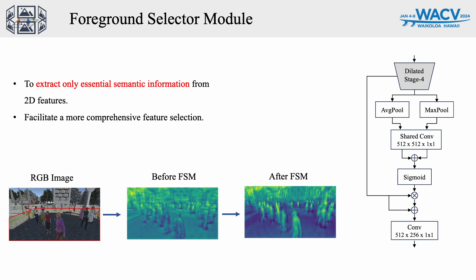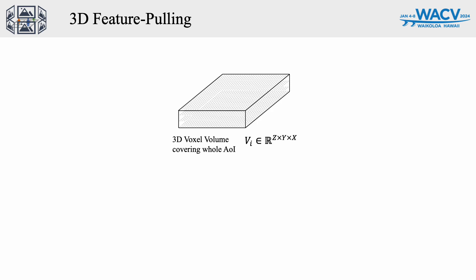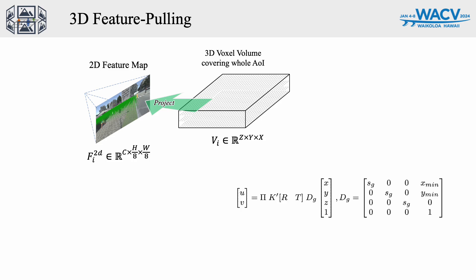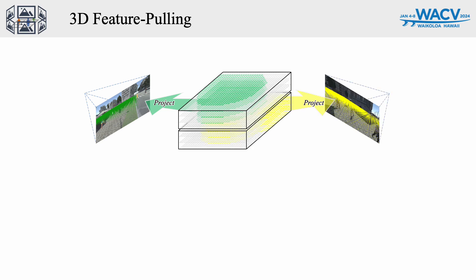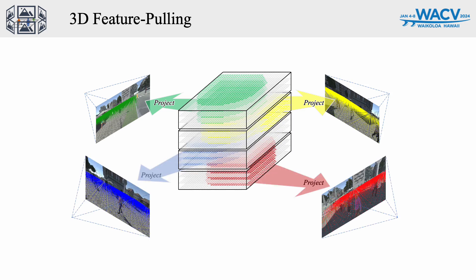Our foreground selector module is inspired by the channel attention module in the squeeze and excitation network. We aim to extract only the foreground features, eliminating unnecessary background information to facilitate a more comprehensive feature selection. In the 3D feature pulling process, we first create a 3D voxel volume covering the whole area of interest. These voxels are projected into each perspective view using the known calibration data. From the projection, we can get the valid pixel coordinates and create a binary mask indicating whether the voxel is inside the camera frustum. We can then pull the feature for each valid voxel, repeating the process for each available view and constructing a 3D feature volume for each camera.